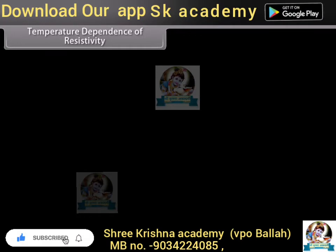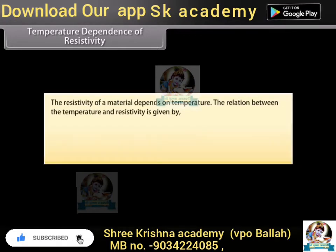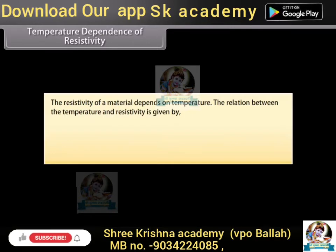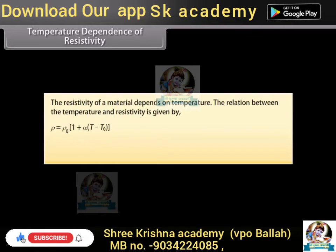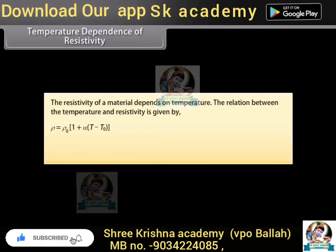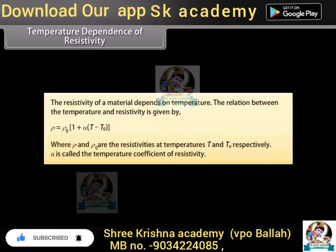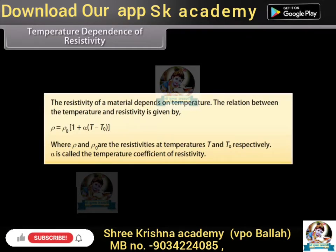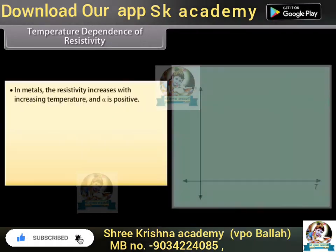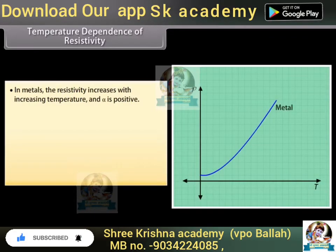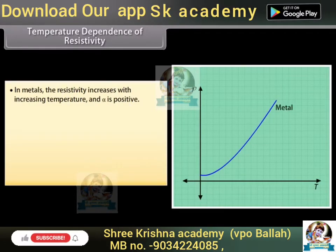Temperature dependence of resistivity: The resistivity of a material depends on temperature. The relation is given by ρ = ρ₀ × [1 + α(T − T₀)], where ρ and ρ₀ are the resistivities at temperatures T and T₀ respectively, and alpha is called the temperature coefficient of resistivity. In metals, resistivity increases with increasing temperature and alpha is positive.